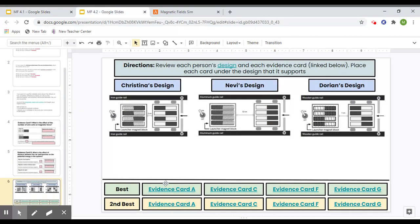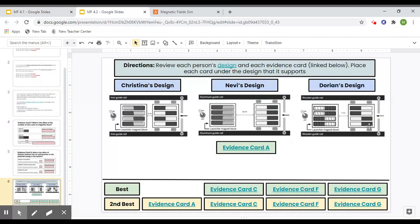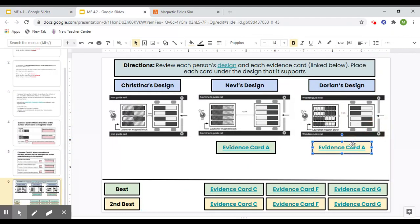That would be evidence card A. So I'm going to find, okay, this one, Nevi's design has all four facing the same direction, so I'm going to put my best evidence card here. And then second best when I look here is when it goes in twos. So two up, two down, and that would be Dorian's design. So I'm going to put my second place one there. So just make sure you're knowing that green is the best and yellow is second best.